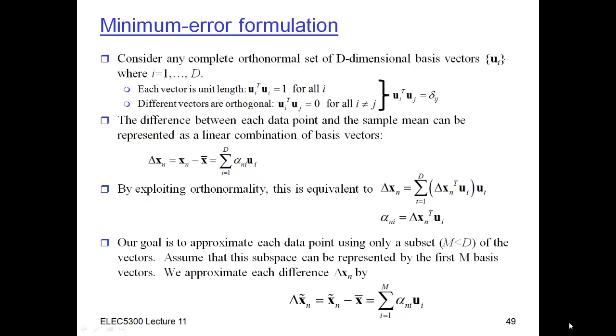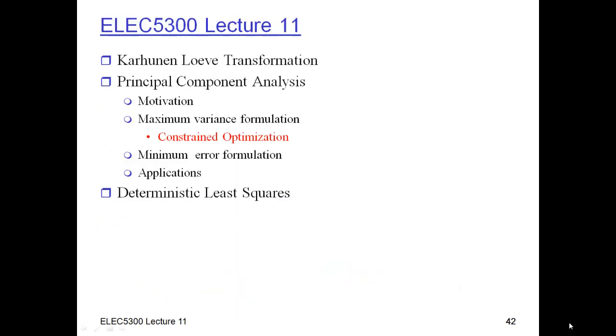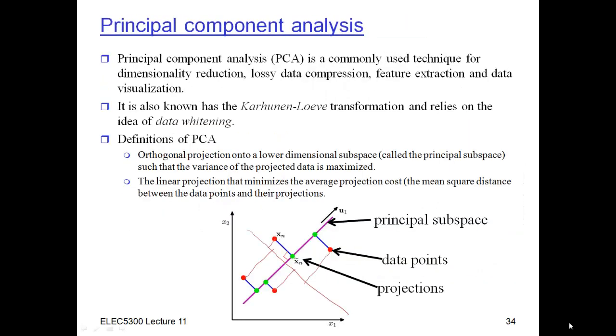In this formulation, what we're interested in is not maximizing the variance, but minimizing the error. Or if we go back, the average length of these blue lines in the figure here, which are the difference between the data points shown in red and the projections shown in green.